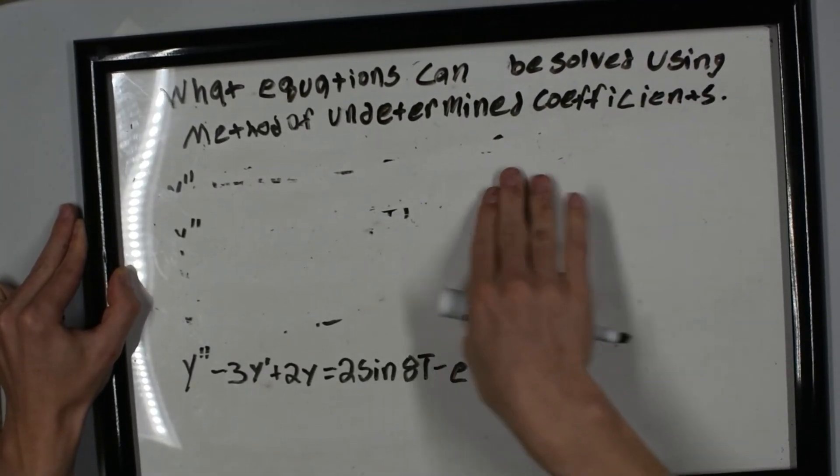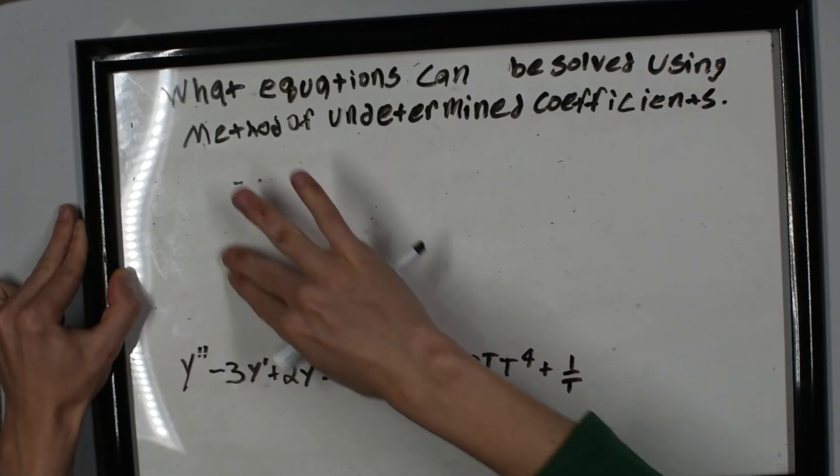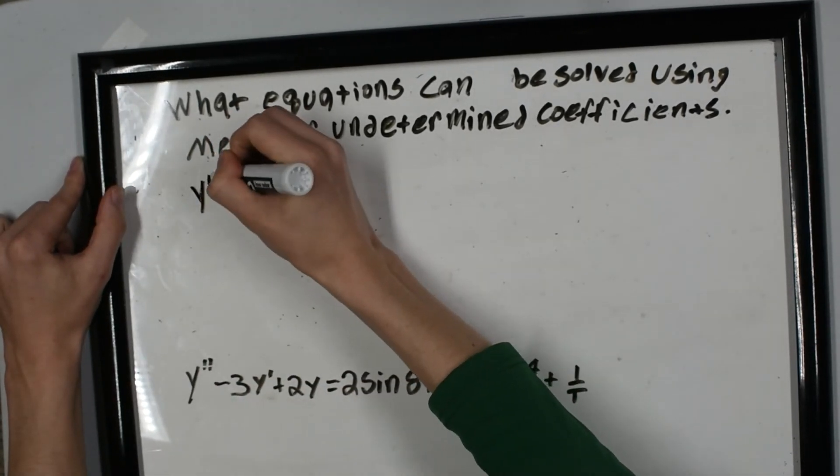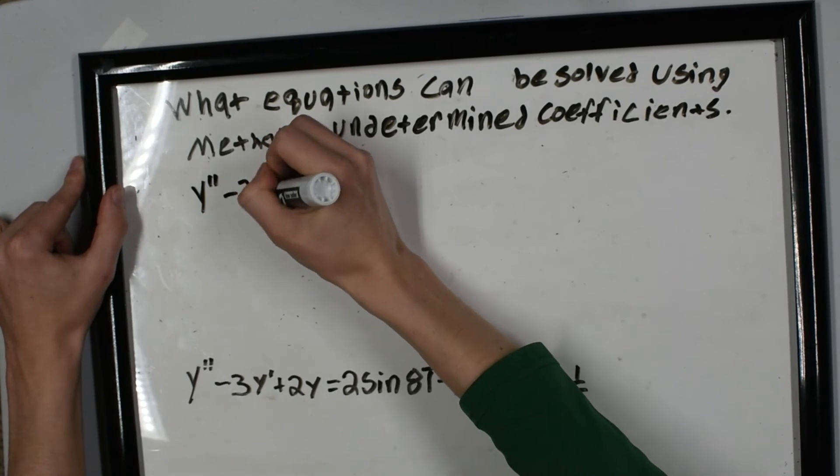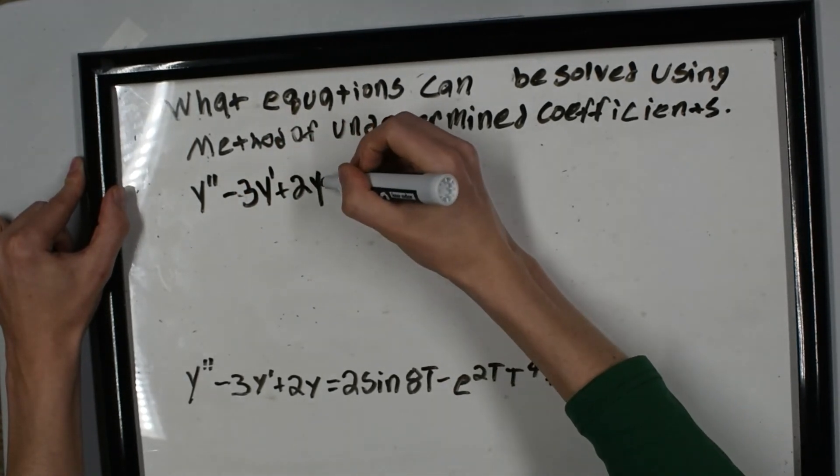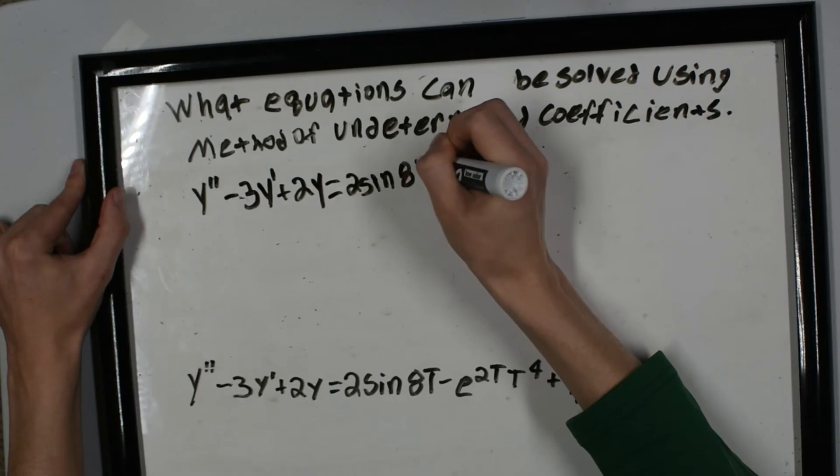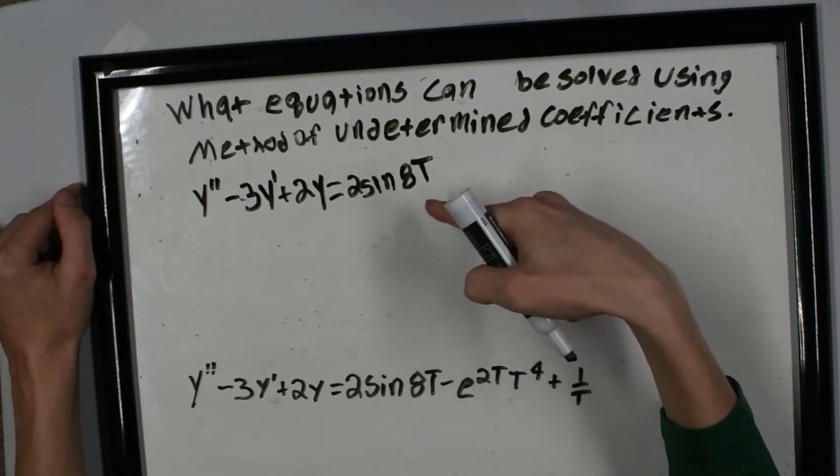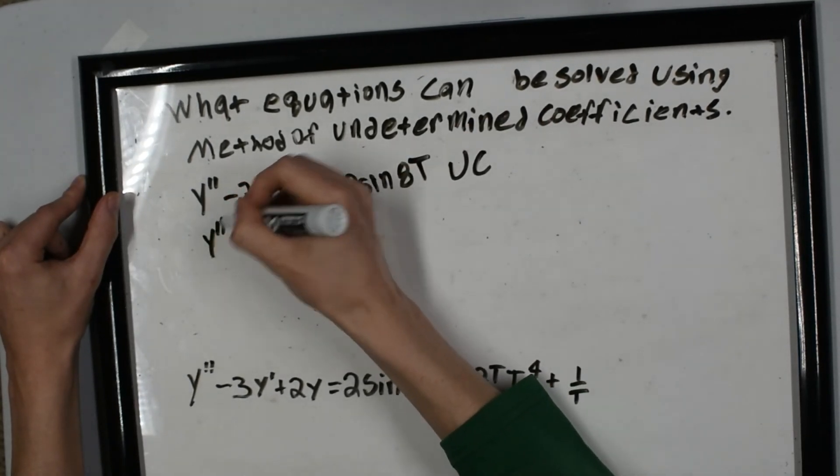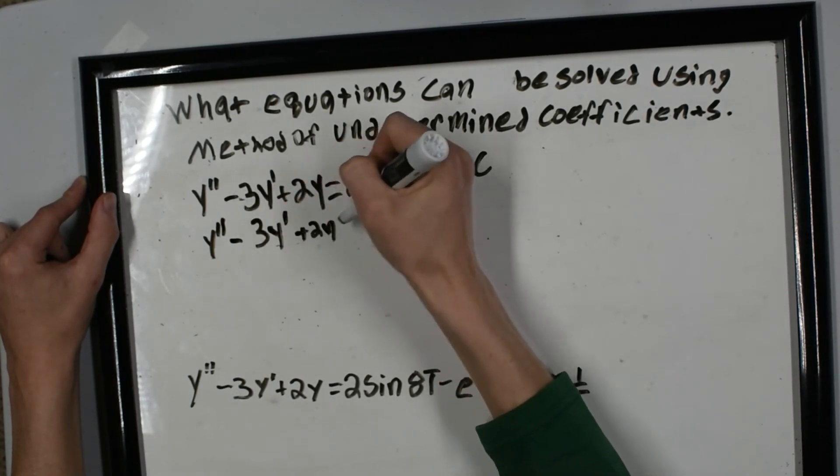I forgot my eraser, so I'll just use my hand. But basically, we have this equals 2sin(θt). And using this, we can use the method of undetermined coefficients. Now we write it again.